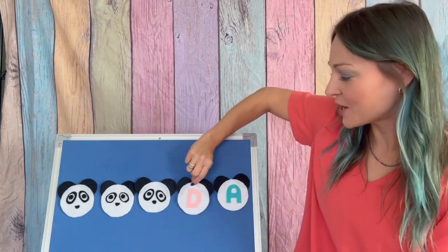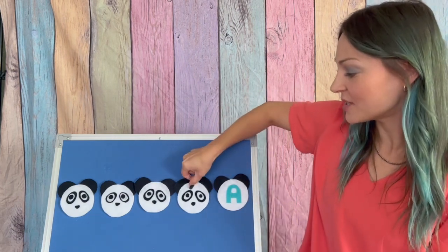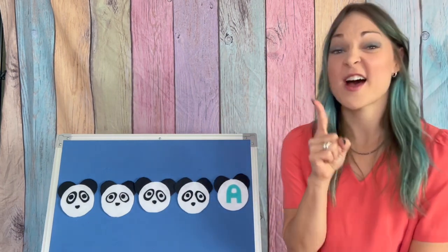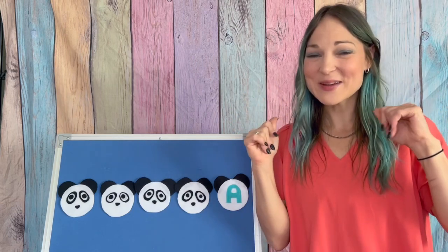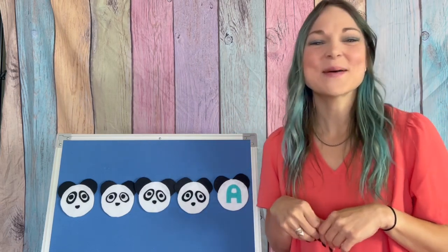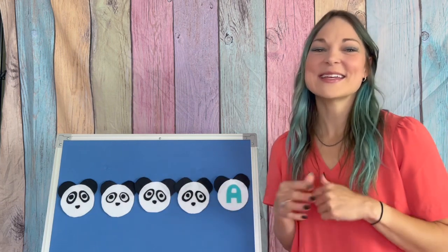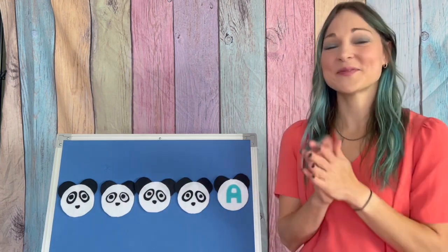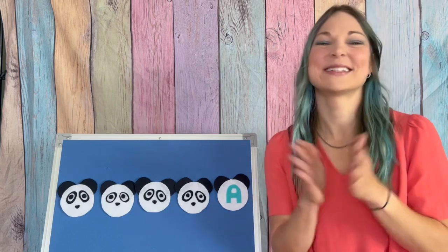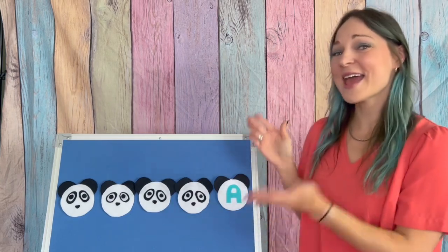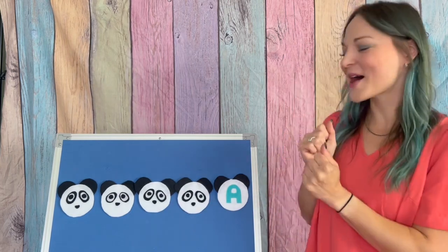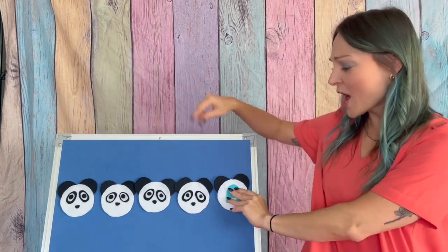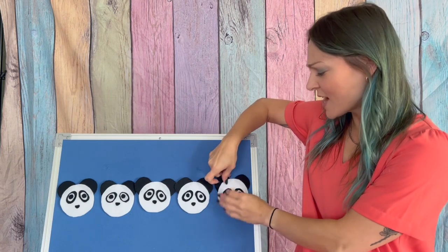All right. Say goodbye to our letter D. There is just one letter left. So when we sing this song through this time, we're going to have a lot of claps. I hope your fingers are ready. Here we go. There is a bear who loves bamboo. Panda is her name. A. A. A. A. Panda is her name. Great job. Our last letter, our letter A.